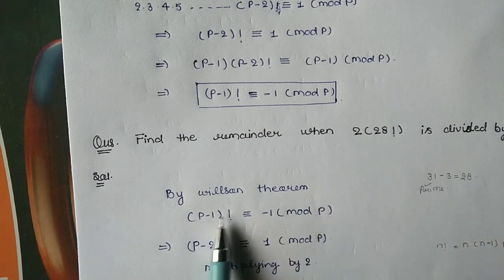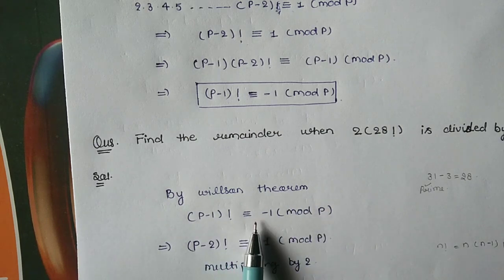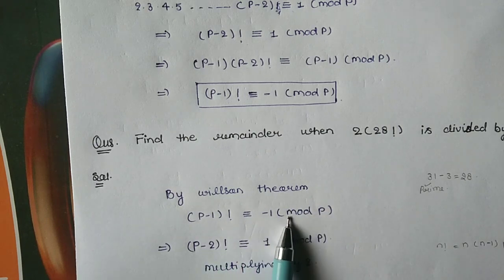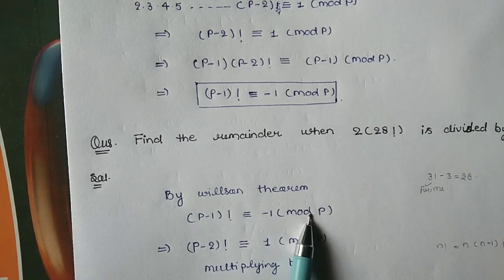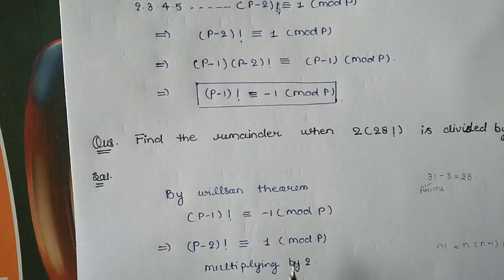We apply Wilson's Theorem: (p-1)! ≡ -1 mod p. Since 31 is prime, we have p = 31, so (31-1)! = 30! ≡ -1 mod 31.